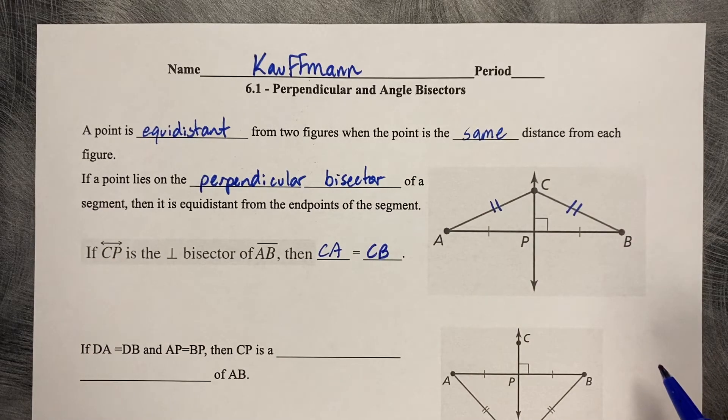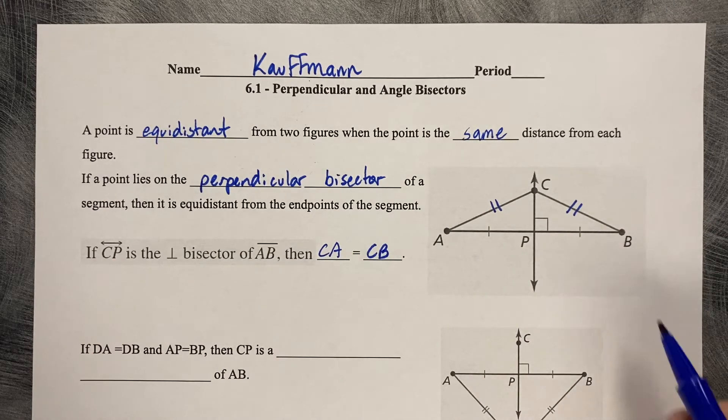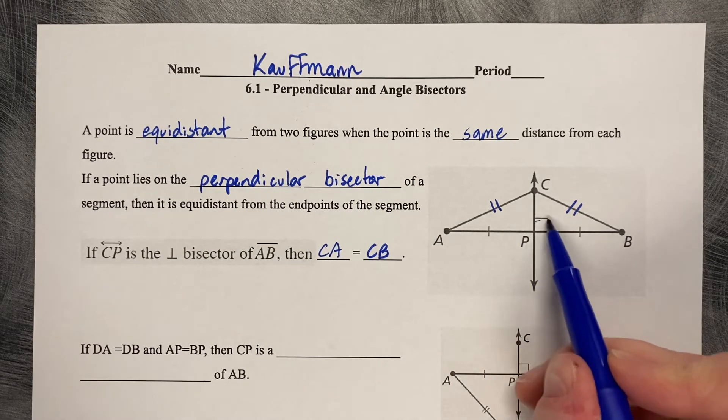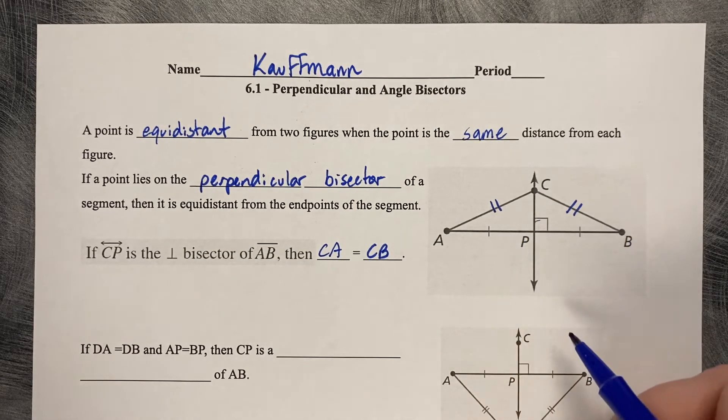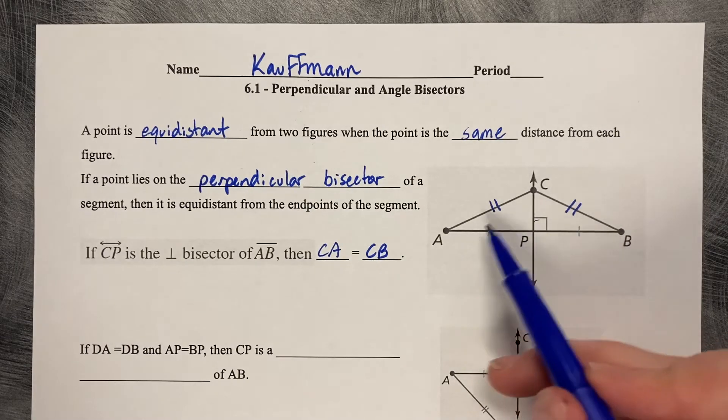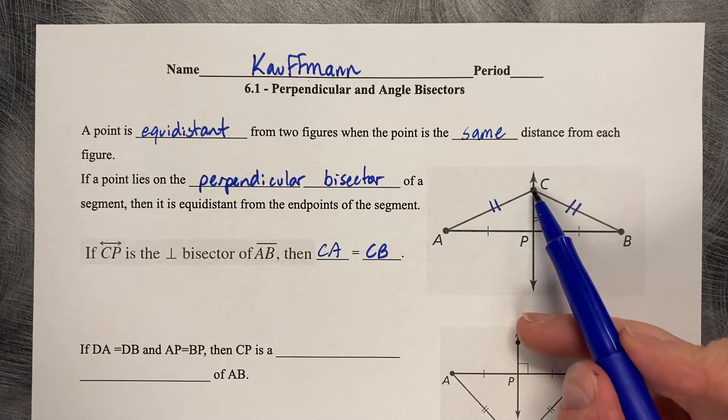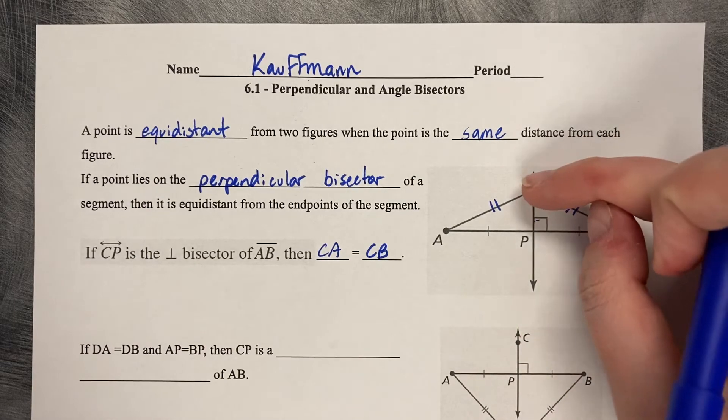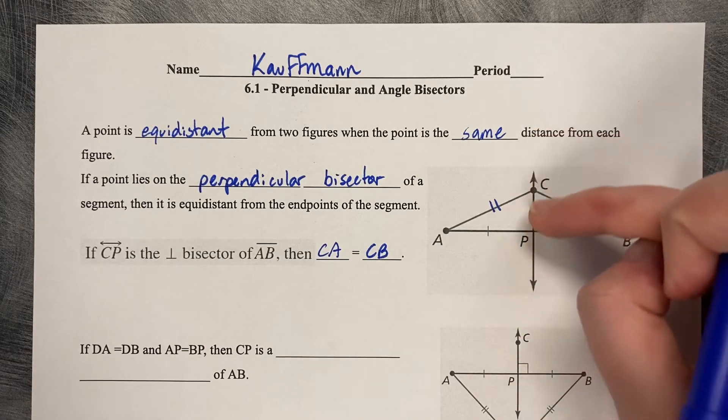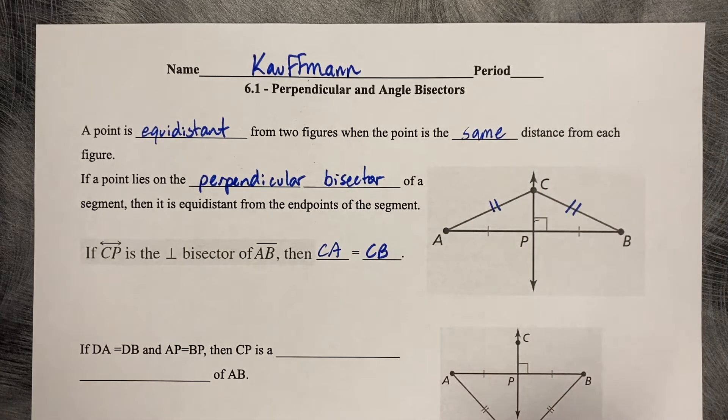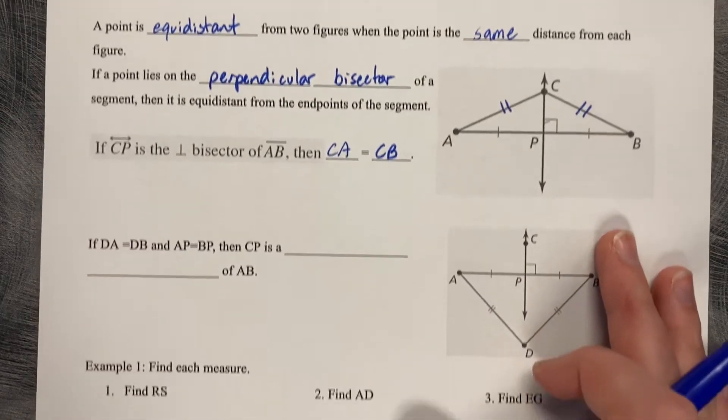It basically makes congruent triangles between the two of them because you've got these two segments of the same length, and this is a perpendicular, so then you've got your congruent lengths to any point on the perpendicular bisector. The cool part is, if you could imagine pulling this point and dragging it up and down the perpendicular bisector, it would stay equal. The length would change, but those two lines would stay the same length.